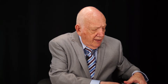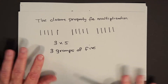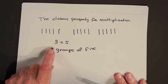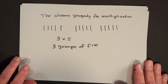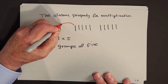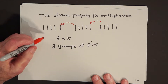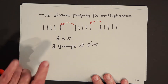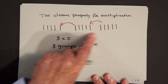The closure property for multiplication works pretty much the same thing. What does 3 times 5 mean? It means you have three groups of five. What does my fundamental property tell me? That the number of tally marks doesn't depend on how they're arranged. So I can push these five over, and now what do I have? One group of fifteen. This many plus this many plus this many is this many.